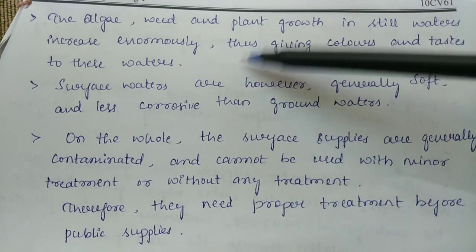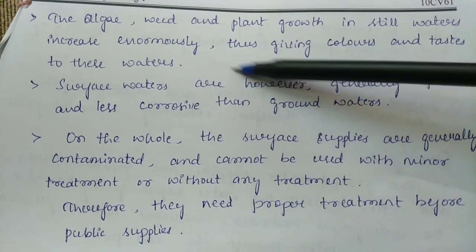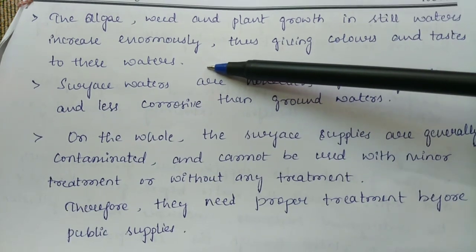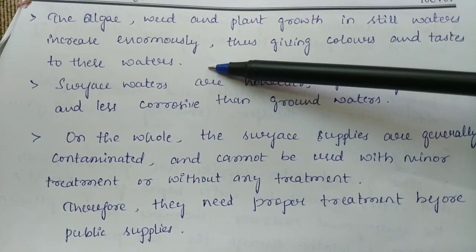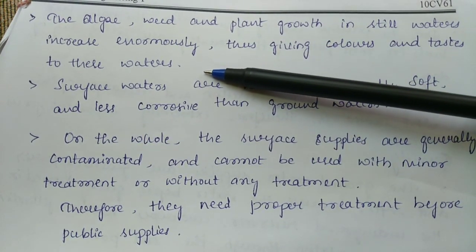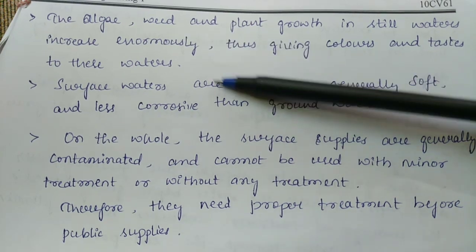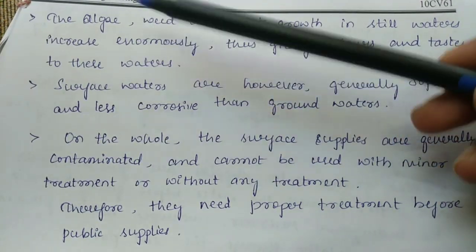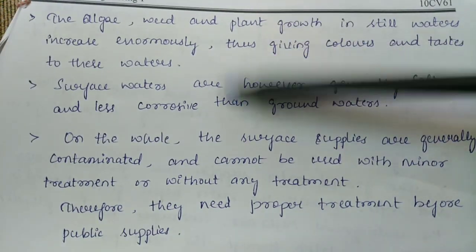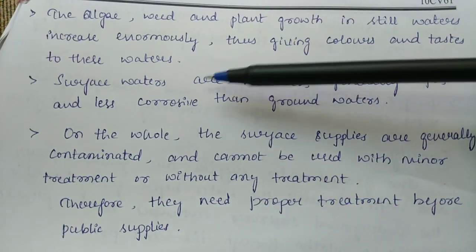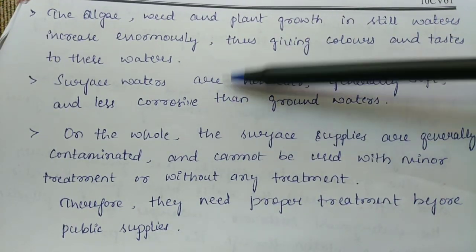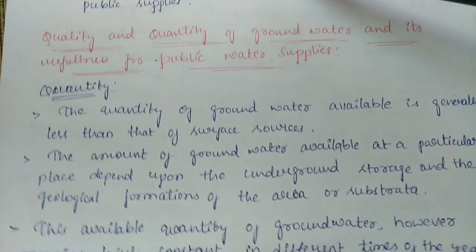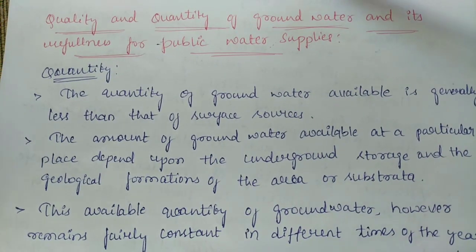Even the presence of algae creates a condition called eutrophication, which is an increased level of nutrients in the water. Sometimes agricultural field runoff also creates conditions that promote more algae growth. All such things have to be removed from the water before it is selected as a source of supply. Next we will discuss about the quality and quantity of groundwater and its usefulness for public supplies.